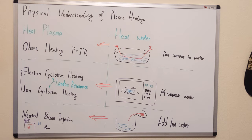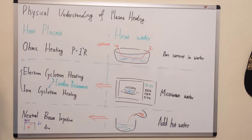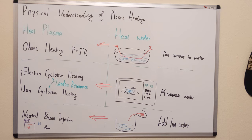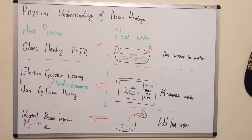Looking at the plasma side, you can think of the plasma as a resistor, and we run a current across it with power I-squared-R. ECH and ICH use the concept of cyclotron resonance. Neutral beam heating ionizes a particle, accelerates it using high voltage, adds electrons to make it neutral, and then injects it into the fusion device.